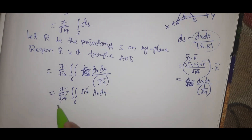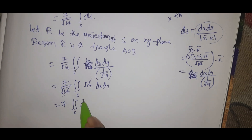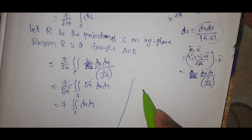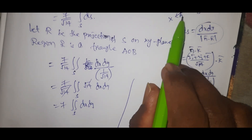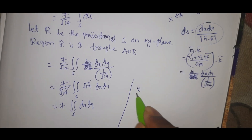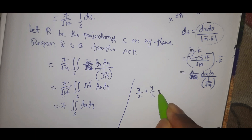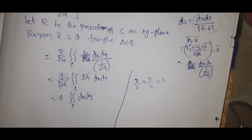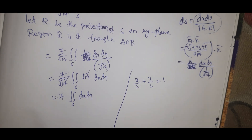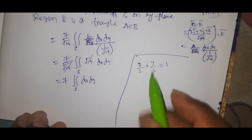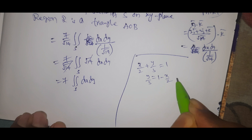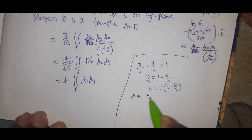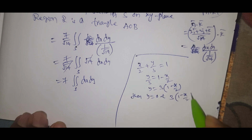Let R be the projection of S onto the XY plane. The region R is triangle AOB. On the XY plane, z = 0, so the boundary becomes x/2 + y/3 = 1, giving y = 3(1 − x/2). The limits are: y from 0 to 3(1 − x/2), and x from 0 to 2.